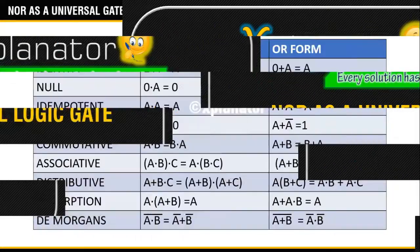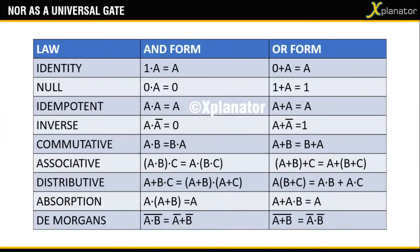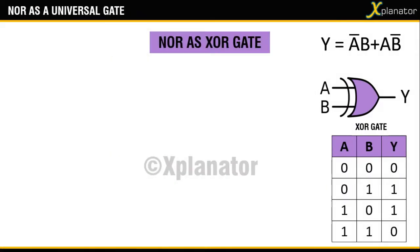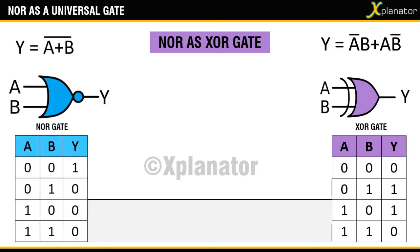Once again we will be taking the aid of this table for the conversions. To represent XOR gate shown in purple with its symbol, expression and truth table by using the NOR gate which is shown in blue, it means you have to write the equation for XOR, that is y equals a bar b plus a b bar, in the format of NOR, that is y equals a plus b the whole bar.